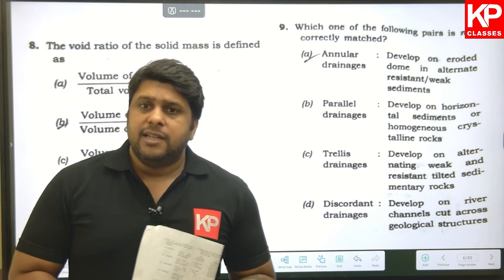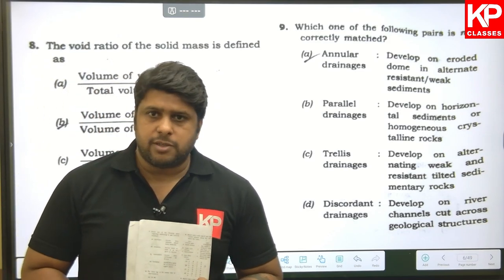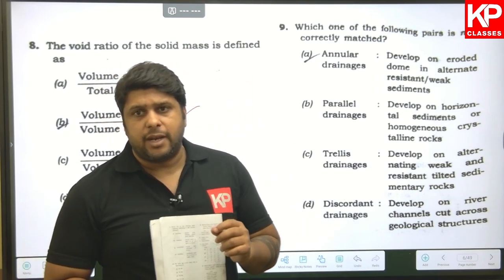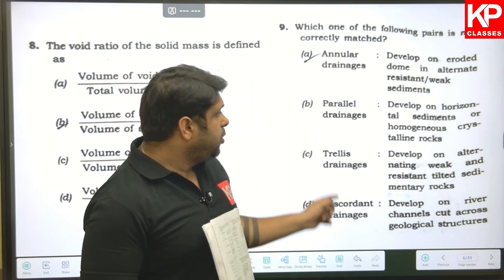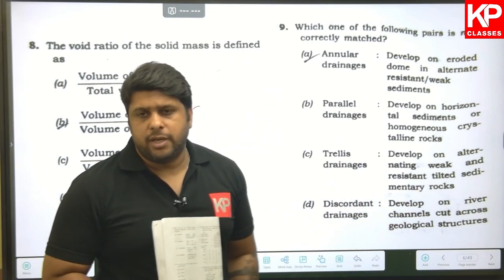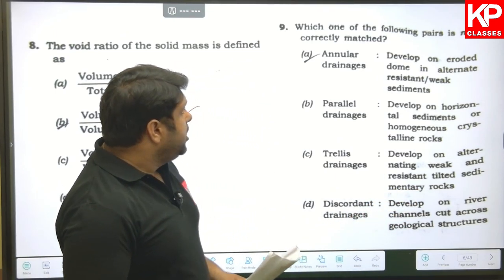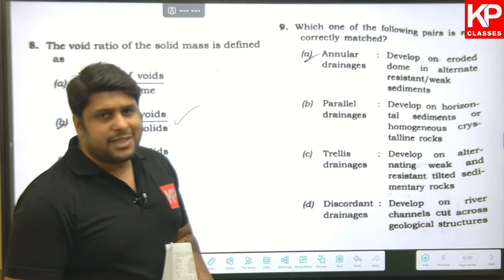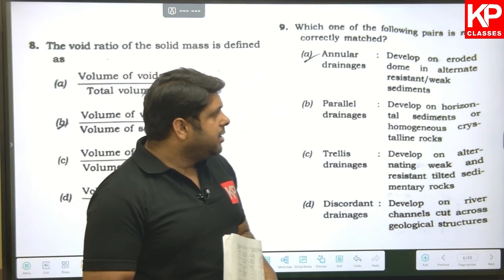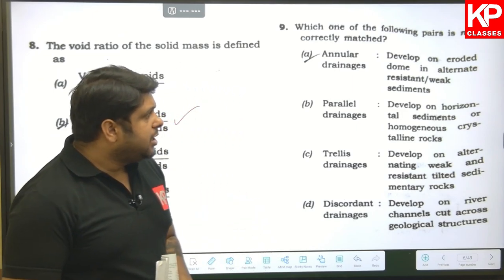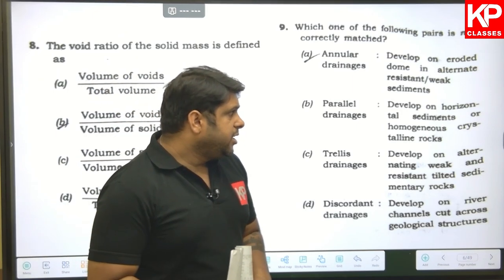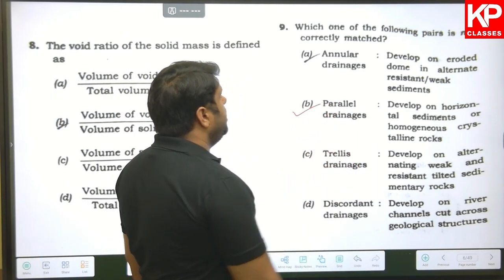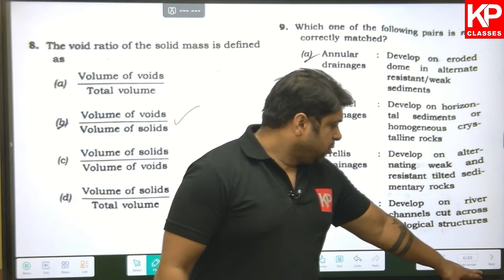Question nine: which of the following pairs is not correctly matched? This paper checks your full knowledge — you need to know all the options. Annular drainage develops on eroded domes with alternate resistant or weak sediments — this is correct. Parallel drainage develops on horizontal sediments or homogeneous crystalline rocks — this is wrong. So B is the right answer.